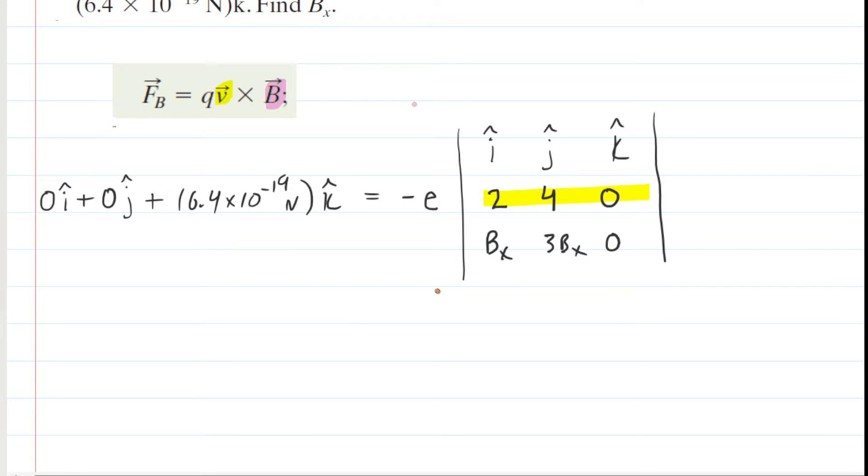Now, what we're going to do is simplify this a little bit. And to do that, we're going to divide both sides of the equation by negative e. When you do that on the left side, you have to divide each component by negative e, technically. But of course, 0 divided by negative e is 0. So i-hat and j-hat will remain 0. So we'll have 0 i-hat plus 0 j-hat. And then when you divide here, you're going to divide the 6.4 by 10 to the negative 19th by negative e. Remember, negative e would be negative 1.6 times 10 to the negative 19th. So you're going to divide by negative 1.6 times 10 to the negative 19th. And you're going to get negative 4.